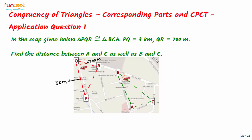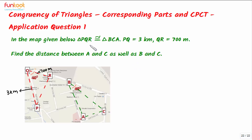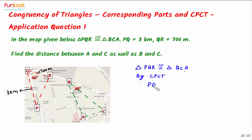We have to find the distance between A and C, and also the distance between B and C. It is given that triangle PQR is congruent to triangle BCA, so by CPCT we will have PQ equal to BC, and QR equal to CA.